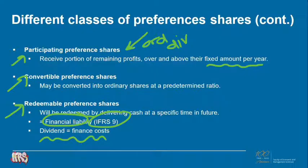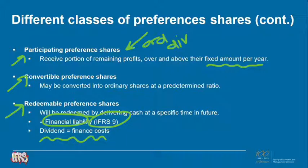In chapter 8, it is assumed, unless otherwise stated, that your preference shares are neither redeemable nor convertible, that they are cumulative preference shares, and that the preference shares are not participating preference shares.